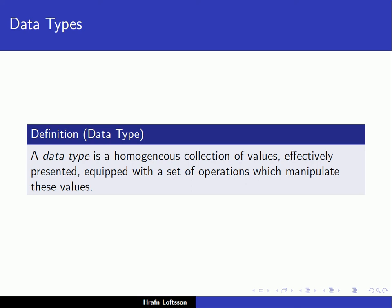It's effectively presented, meaning that on the hardware machine there is an effective representation of integers. That representation is hidden to us — we don't have to know exactly how it is represented, but we assume it's effectively presented in the hardware machine. And finally, the integer data type comes with a set of operations we can use to manipulate the values, such as arithmetic operations like addition, subtraction, multiplication, and division. So according to this definition, integer is a true data type.